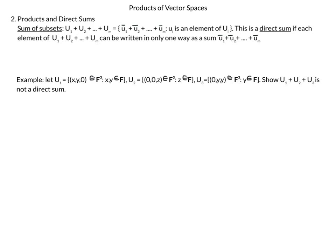Let's do some examples. We let U1 be the subspace of F3 where the third coordinate is zero: U1 = {(x, y, 0)}. U2 will be {(0, 0, z)}. U3 will be {(0, y, y)} — the set where the first coordinate is 0 and the second and third coordinates are equal. We're going to show that U1 plus U2 plus U3 is not a direct sum.